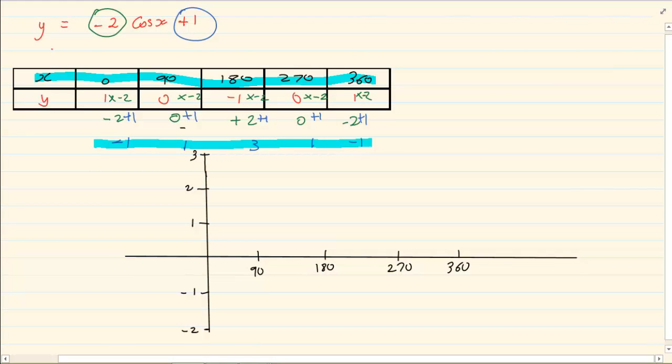So now when we are drawing we are going to plot 0 and minus 1. Then we are going to plot 90 and 1, 180 and 3. Then we have 270 and 1, and then we have 360 and minus 1. And then again it is a matter of joining the dots. And there is your graph.